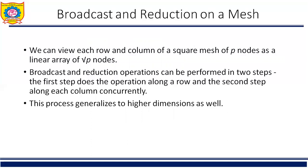For broadcast and reduction on mesh, we can view each row and column of a square mesh of p nodes as a linear array of root p nodes. Broadcast and reduction operations can be performed in two steps: the first step does the operation along the row, and the second step along each column concurrently. This process generalizes to higher dimensions as well.